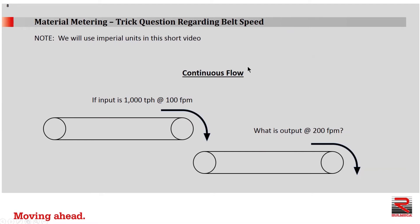Now let's turn our attention to a trick question. In the example of continuous flow, if we have one continuously running conveyor feeding another continuously running conveyor and the material is coming in at 1000 tons per hour and this conveyor belt has a speed of 100 feet per minute, what will be the output if this conveyor belt has a speed of 200 feet per minute? The answer is 1000 tons per hour — 1000 tons per hour in means 1000 tons per hour out in a continuously running situation. A different belt speed simply means that the cross section of the material in the trough will be different, but in a continuous flow, the belt speed will not affect the carrying rate.